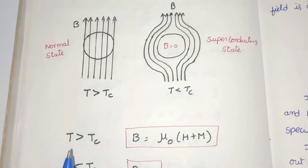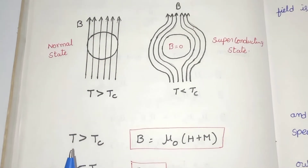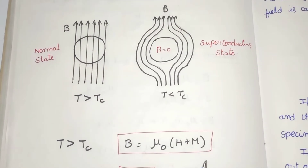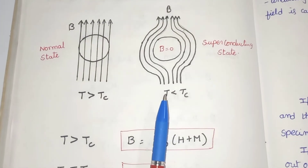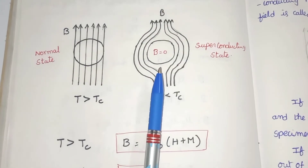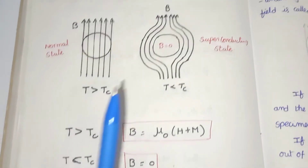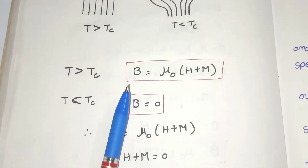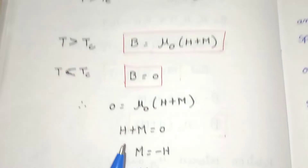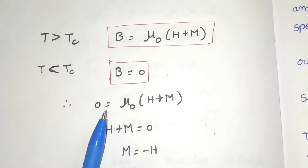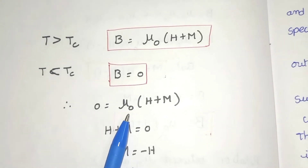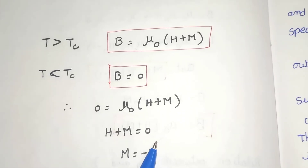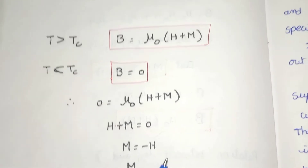Since we apply the magnetic field at T less than Tc, in the normal state B equals μ₀(M + H). In the superconducting state, inside the material B equals zero. Substituting B = 0 into the equation: 0 = μ₀(M + H), so M + H = 0, giving M = −H.